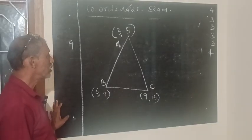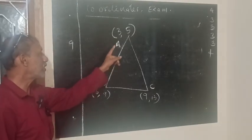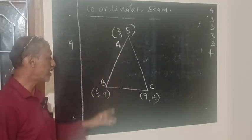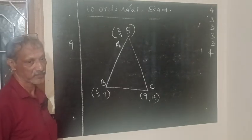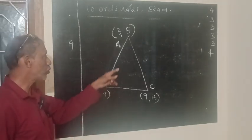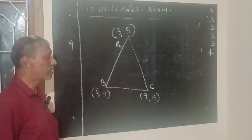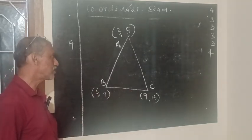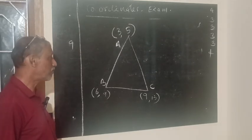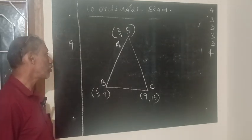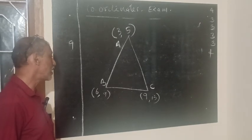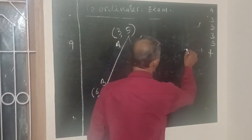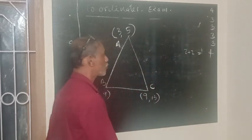Find the perimeter of the triangle A, B, C and also prove that this is an isosceles triangle. We have to prove A, B, C is isosceles, right? If it is an isosceles triangle, then prove it and find out what is the perimeter of the triangle A, B, C.